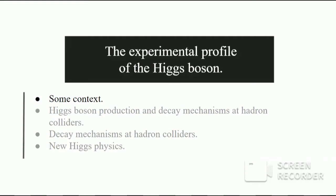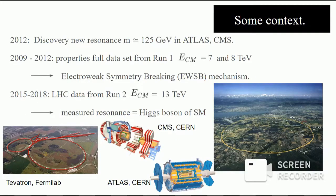Let's talk about the experimental profile of the Higgs sector in these colliders. Let's introduce a little bit of history — the history of the discovery of the Higgs particle — and then talk about the different production and decay mechanisms or channels that we find in these hadron colliders. The Higgs boson could be excluded for all masses except for a small window around 125 GeV, where an excess with a significance of around 3 sigma was observed in 2011.